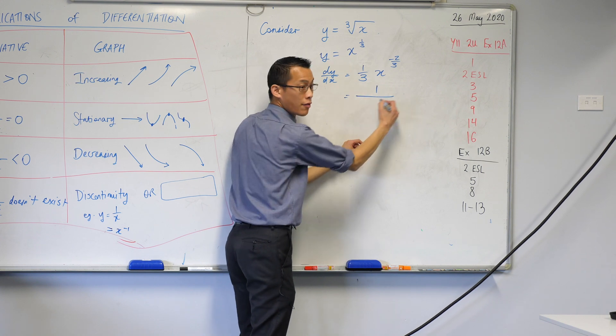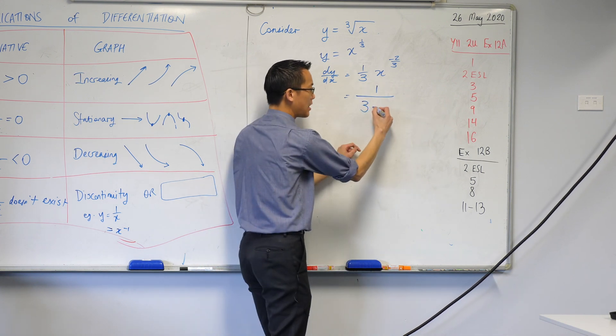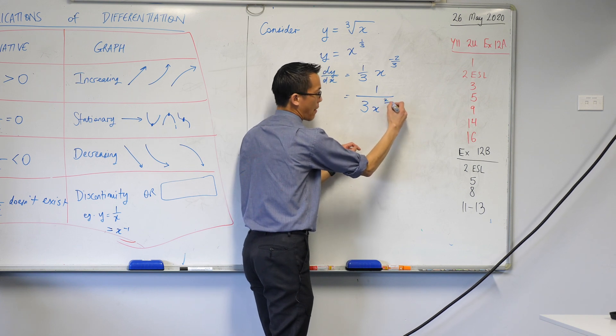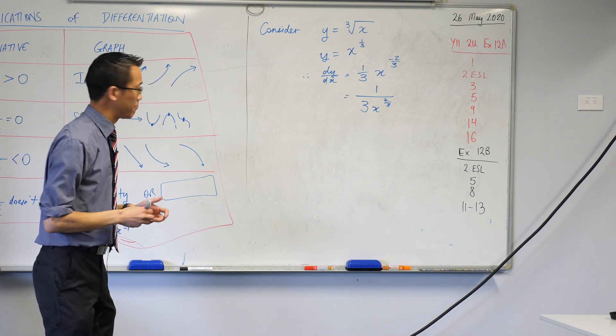So I'm going to write it as 1 over. There's already a 3 there. And then you've got the x to the power of 2 thirds. Are you okay with that? It does look a bit weird, but that's what it is.